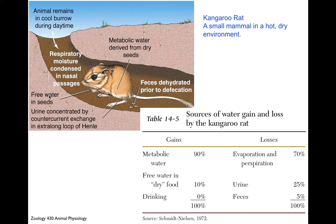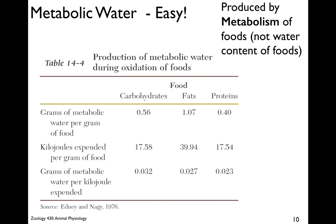They resorb water in their rectum and produce a super dry feces. They gain water from seeds — there aren't many succulent water sources available — so seeds don't provide much water. Most of their water comes from metabolic water from catabolism of foodstuffs: about 90% from metabolic water and 10% from free water, and they don't drink at all. Their losses are mainly in evaporation and perspiration, with greatly reduced water loss from urine and feces.